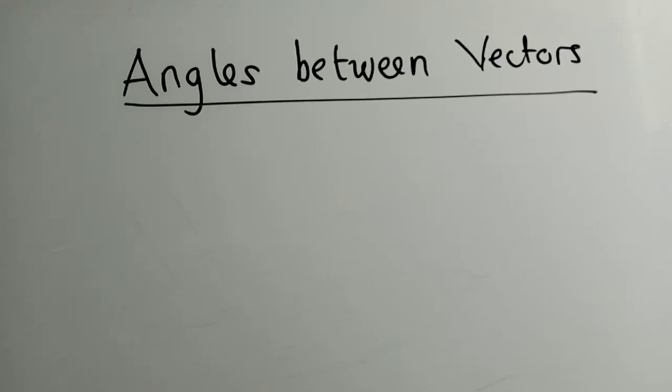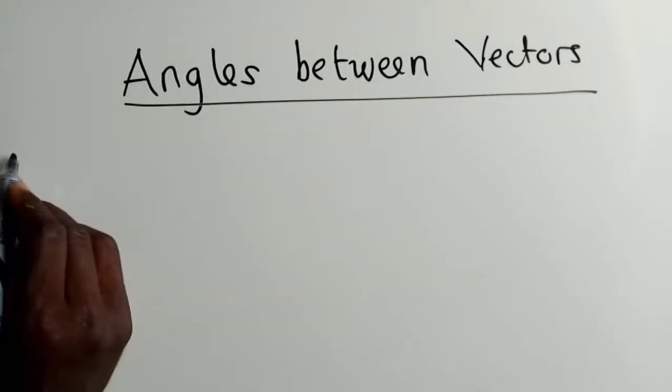To find the angle between vectors, you need to know the formula, which looks like this.